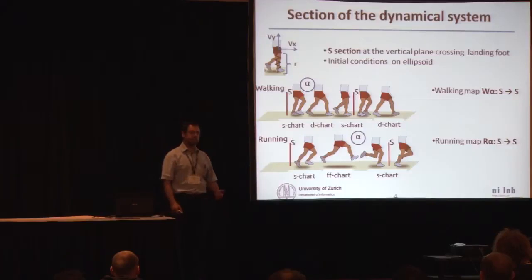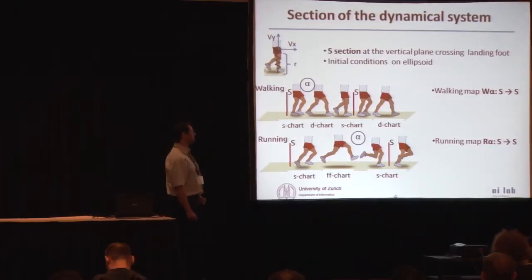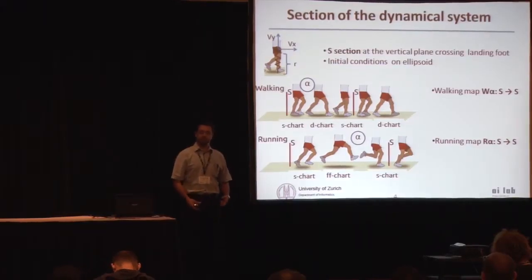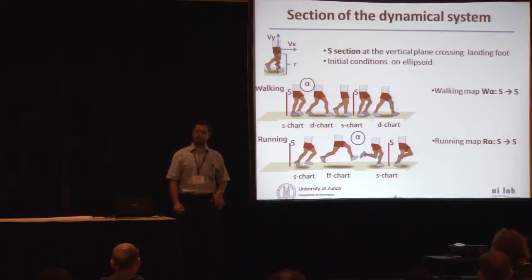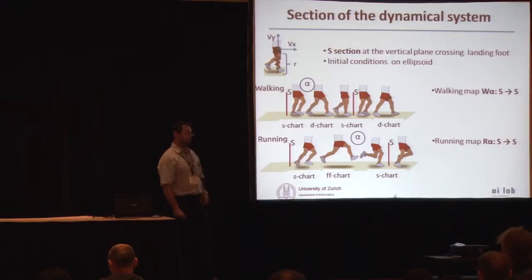Basically it's going to be a section. This section is defined when the stance phase is perpendicular against the ground. And at this point, the system is going to be defined by the compression of the spring, the vertical velocity and the forward velocity. This model is conservative, so we know the energy is not going to change. So at the end, we just need one velocity and the compression of the spring. It can be used to identify very quickly the symmetric gaits. So all the initial conditions of the system are going to lay on an ellipsoid that is going to be defined by the energy.